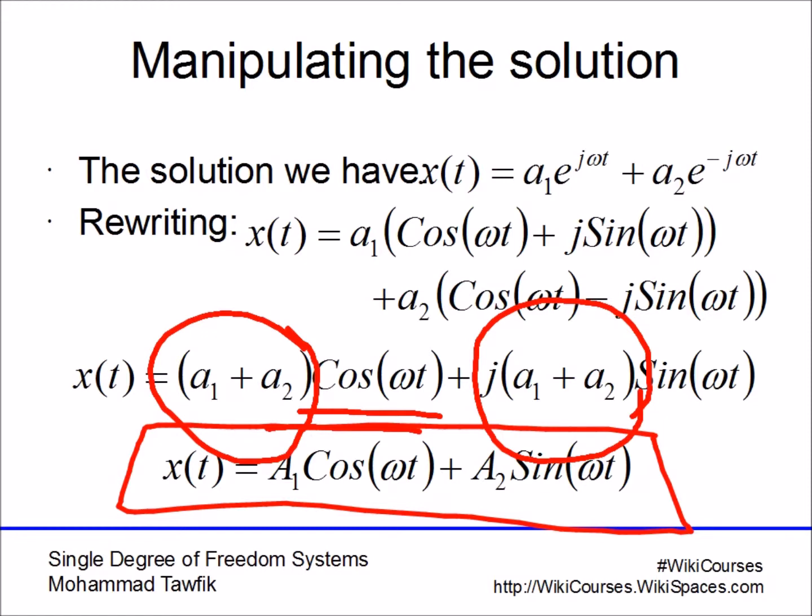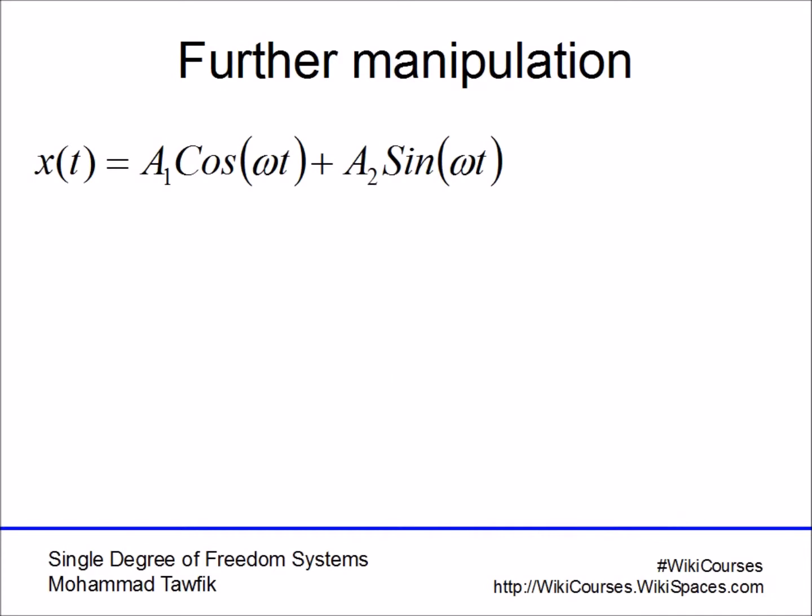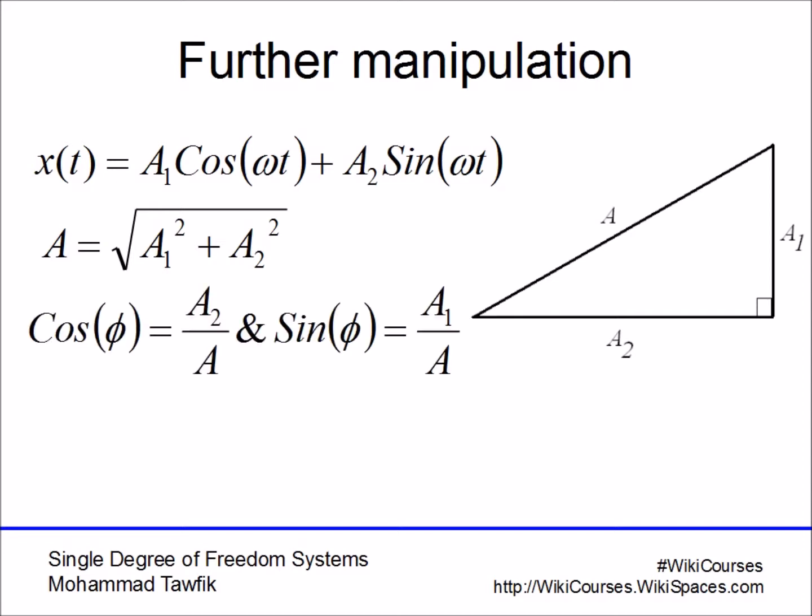Finally using another type of manipulation, let's draw this triangle - a right angle triangle with A₁ and A₂. You'll find that the hypotenuse, let's call it A, is square root of A₁ squared plus A₂ squared.